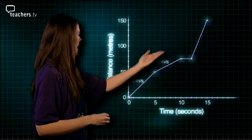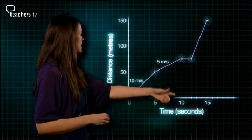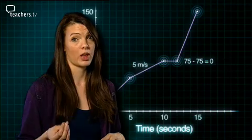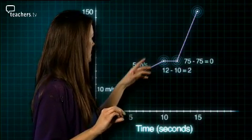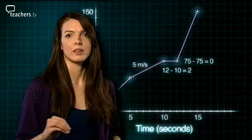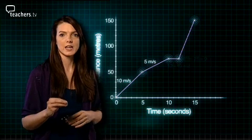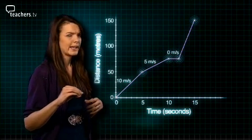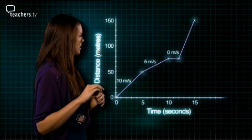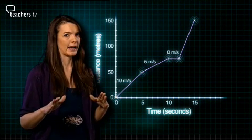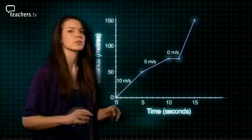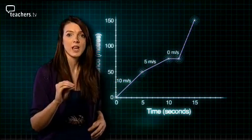The third leg starts at (10,75) and finishes at (12,75), which means the distance travelled is nothing, and the time taken is 2 seconds. So the speed is 0 divided by 2, which is 0 metres per second — we're not moving anywhere. Whenever you see a flat horizontal line like this in a distance-time graph, it means your speed is 0; you are staying put.